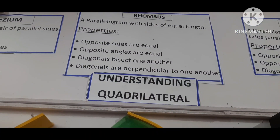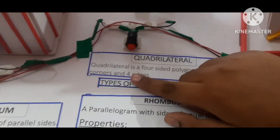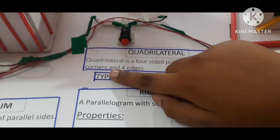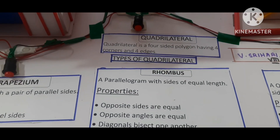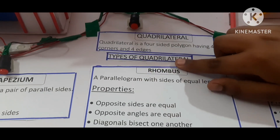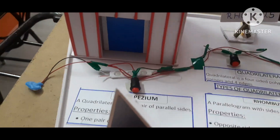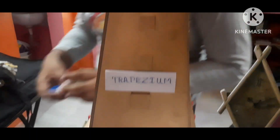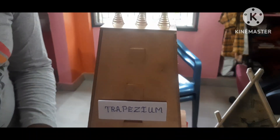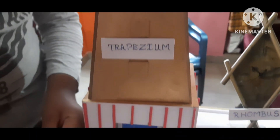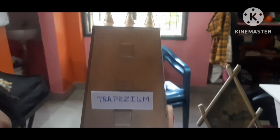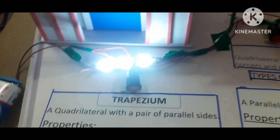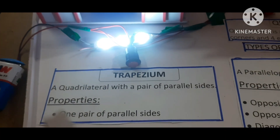So what are we going to do? This is quadrilateral. The types of quadrilateral include: trapezium, rhombus, square, and parallelogram.